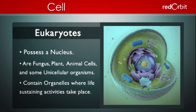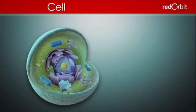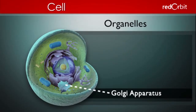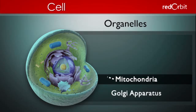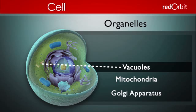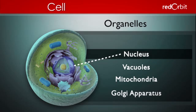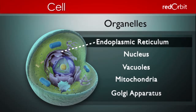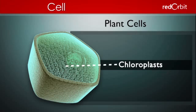Besides a nucleus, the other significant difference between prokaryotes and eukaryotes is that eukaryotic cells contain specialized structures called organelles, in which specific life-sustaining activities take place for the cell. The major organelles include the Golgi apparatus, which sorts, packages, processes, and modifies proteins. Mitochondria, which are the energy provider for the cells. Vacuoles, the storage units found in some cells. The nucleus, which controls all activities in the cell. And the endoplasmic reticulum, which serves many general functions. Plant cells also have chloroplasts, which are responsible for photosynthesis of sunlight.